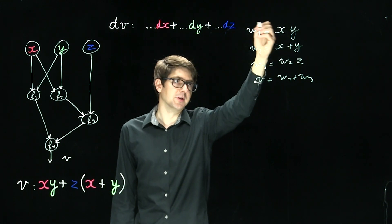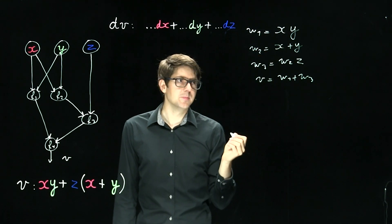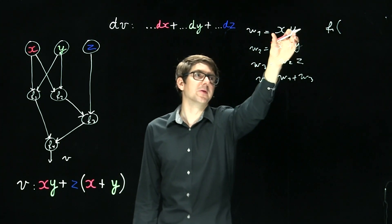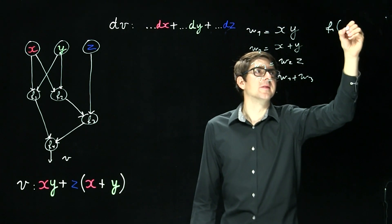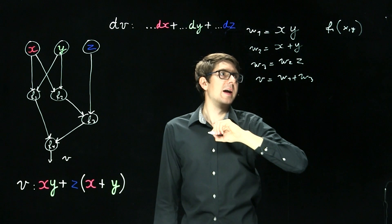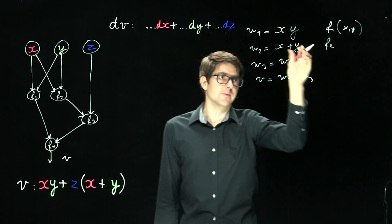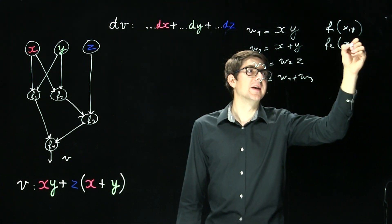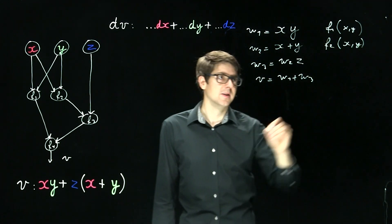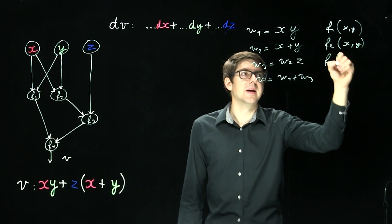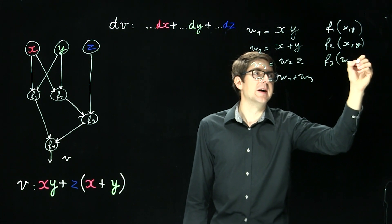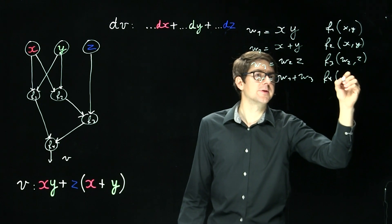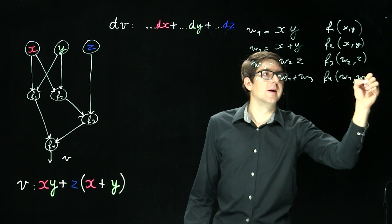Now this is very concrete with multiplications and additions. Let's write it a bit more abstract by writing it as function. So in general we want a binary function here. In this case a binary function of x and y. For the second line in our algorithm we write f2. It's again a function of x and y but a different one. Again we have a function, this time it depends on w2 and z, w3. And lastly we have a function f4, which depends on w1 and w3.